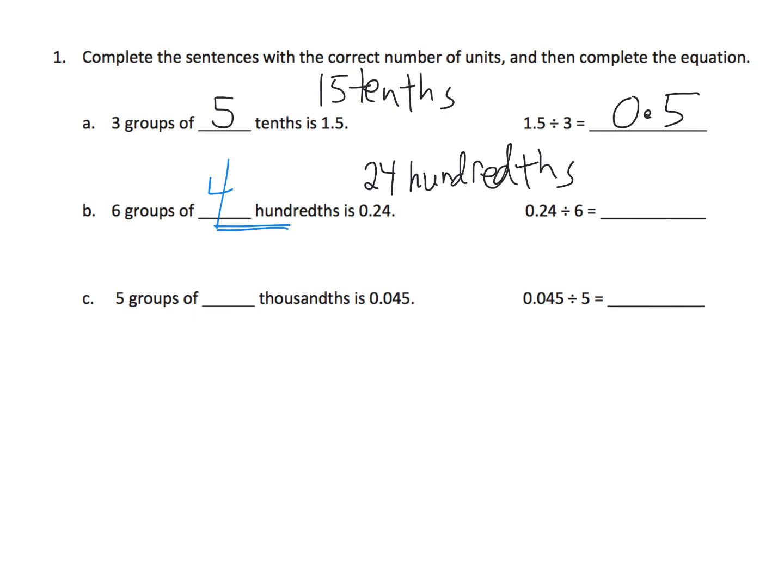And the last one here we've got five groups of how many thousandths is equal to 45 thousandths. This is where having our students just know that place value chart inside and out is absolutely essential. Five groups of what gives us 45 thousandths? It's five groups of 9 thousandths gives us 45 thousandths, and that's going to look like 0.009.